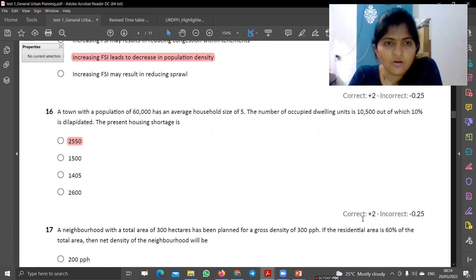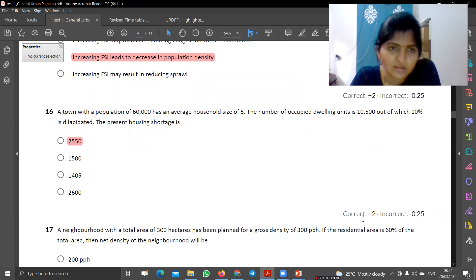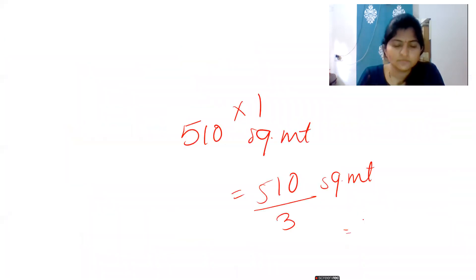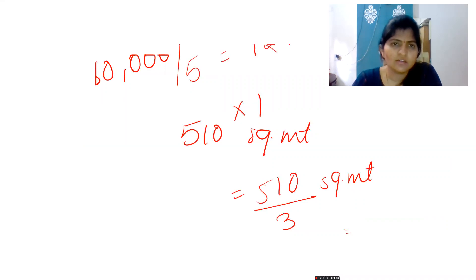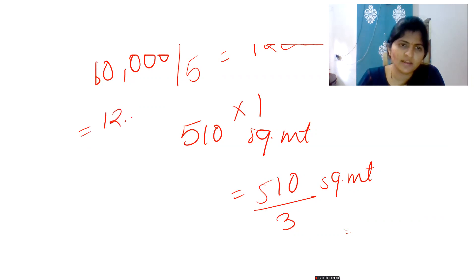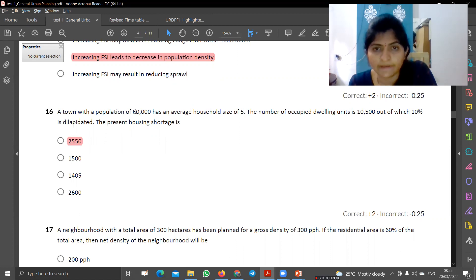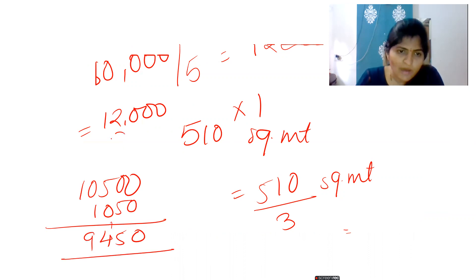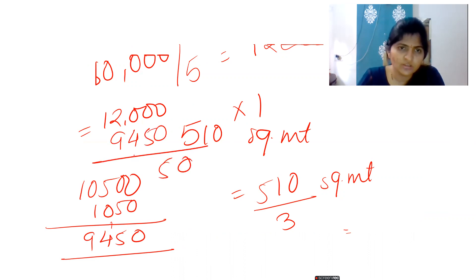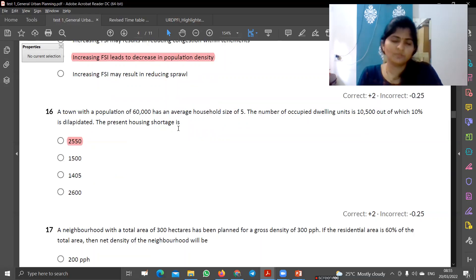Next is: a population of 60,000 has an average household size of 5, and the number of existing dwelling units are 10,500, out of which 10% is dilapidated. The present shortage is for a 60,000 population. If you divide by the average household size of 5, you can find out how many houses there should be — it will be 12,000 houses. You have to apply normal common sense and common mathematics.